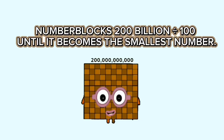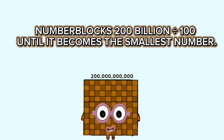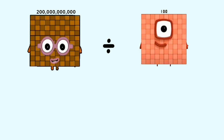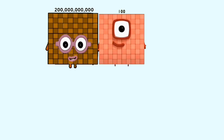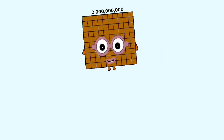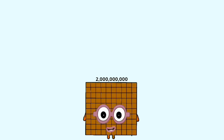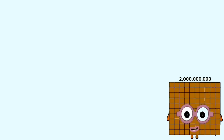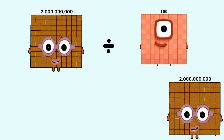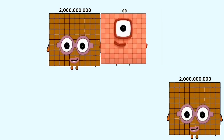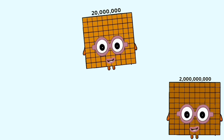Number blocks: 200 billion divided by 100, until it becomes the smallest number. 200 billion divided by 100 equals 2 billion. 2 billion divided by 100 equals 20 million.